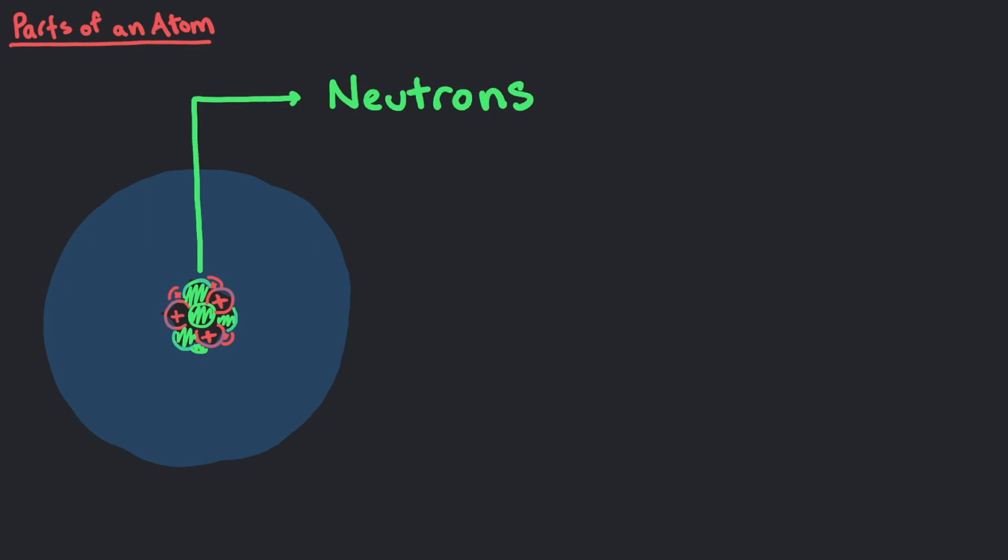Neutrons are exactly as they sound. They are neutral particles found in the nucleus. Unlike protons that each have a plus 1 charge, neutrons are electrically neutral. They have no charge.